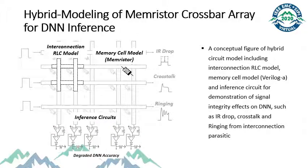We propose a hybrid circuit model and demonstrate the hardware-based DNN inference using large-scale memristor crossbar array in terms of signal integrity problems that cause reliability problems from the interconnection parasitic of an array. This conceptual figure of hybrid circuit model includes interconnection RLC model, memristor cell model from Verilog-A, and inference circuit for demonstration of signal integrity effects on DNN, such as IR drop, crosstalk, and ringing from interconnection parasitic.